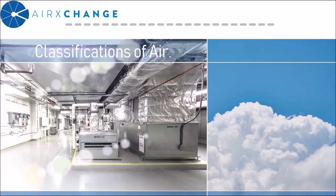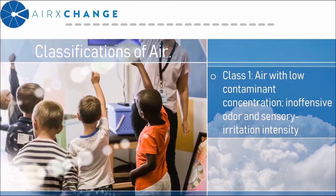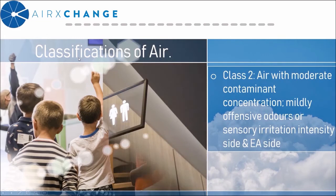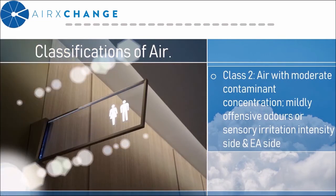Let's take a closer look at the ASHRAE ventilation standard. Within the standard there is a section for air classification and recirculation, which aggregates different space types and their relative level of contaminants and provides a method to determine the appropriate amount of leakage. The air is divided into four different classes: Class 1 through 4. Class 1 is air with low contaminant concentration and inoffensive odors — examples include classrooms, office spaces, assembly rooms, churches, and corridors. Class 2 is air with moderate contaminant concentration or mildly offensive odors — examples include restrooms, swimming pools, dining rooms, and locker rooms.